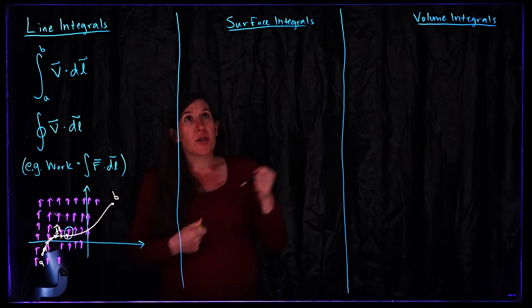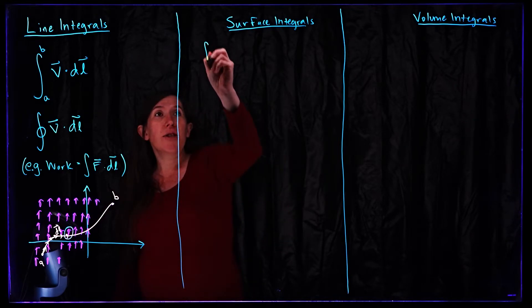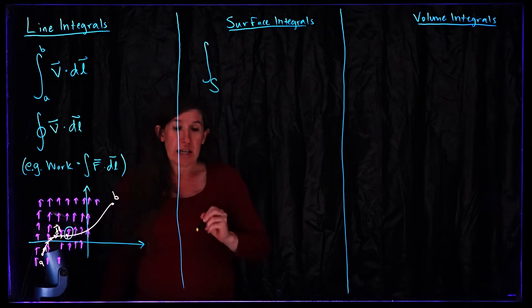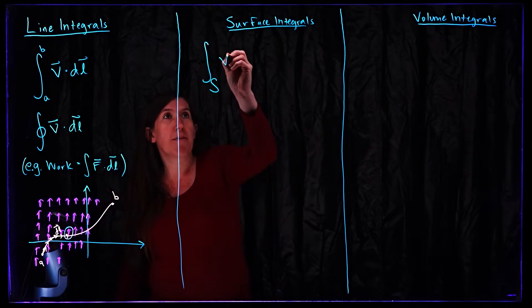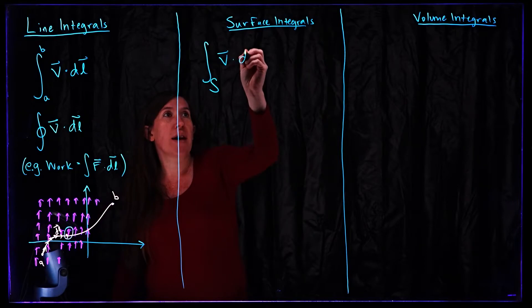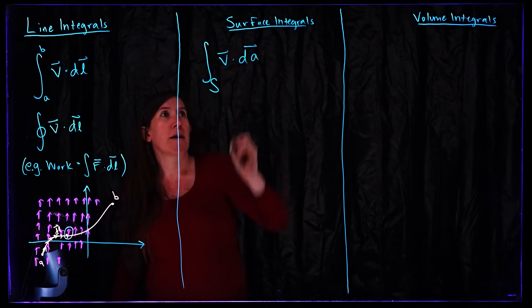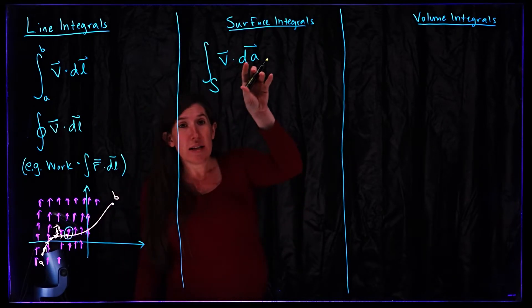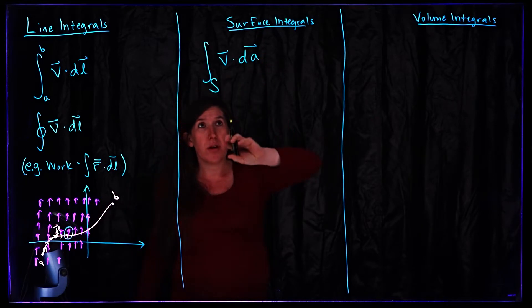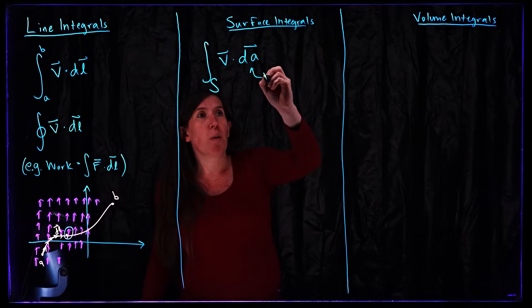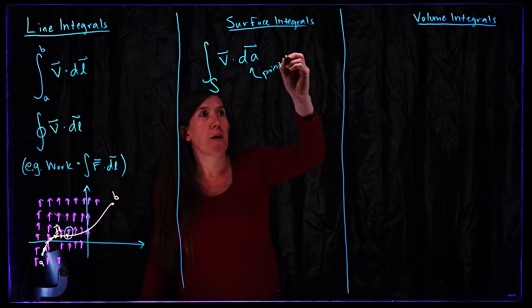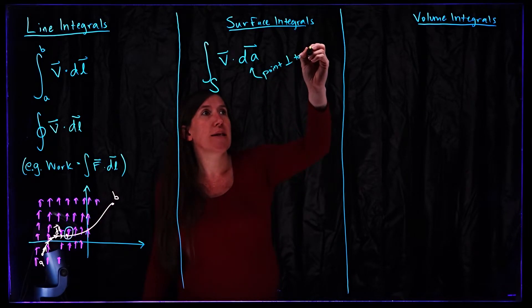All right what about surface integrals? Here we're going to integrate over some surface, which again you need to specify what that surface is, of some vector field dotted with now with some area. And what is going to be the direction of our little infinitesimal area element?